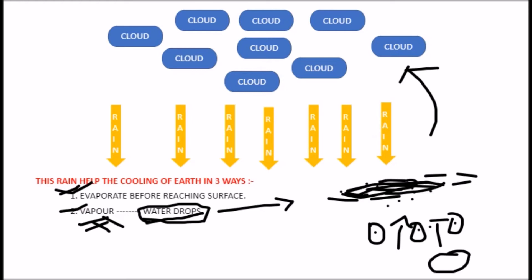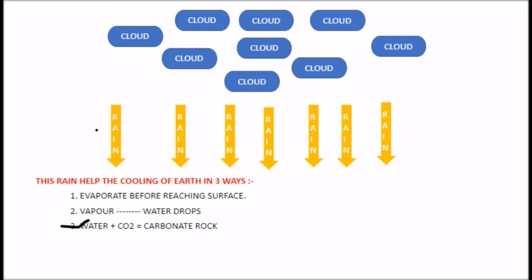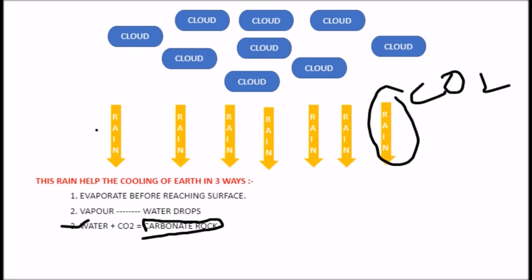The rain is in the water, and the rain is in the primitive atmosphere. Carbon dioxide is in the carbon dioxide — the water is in the carbon dioxide, carbon dioxide is the same carbon dioxide.